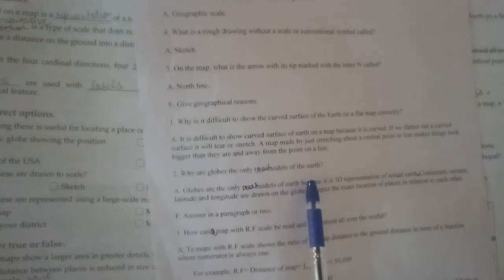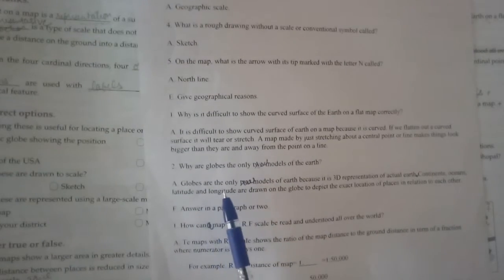Why are globes the only true models of the earth? Globes are the only true models of the earth because it is a 3D representation of actual earth. Continents, oceans, latitudes, longitudes, all are drawn on the globe to depict the exact location of places in relation to each other. These are the two reasons.